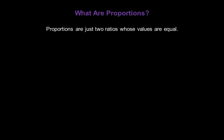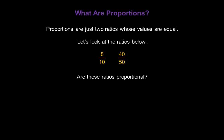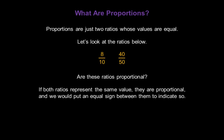Proportions are just two ratios, or fractions, whose values are equal. Let's look at the ratios below. Consider 8 over 10 and 40 over 50. Are these ratios proportional? Do they equal each other? If both ratios represent the same value, they are proportional, and we would put an equal sign between them to indicate so.